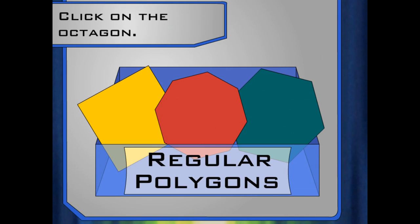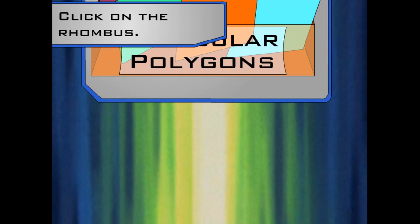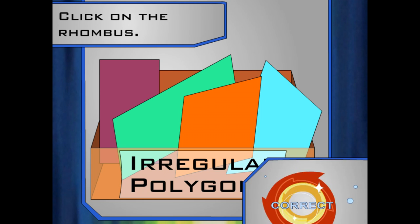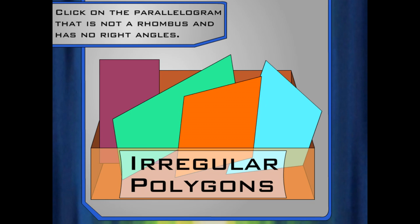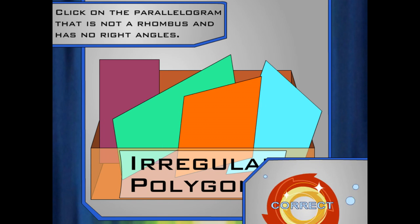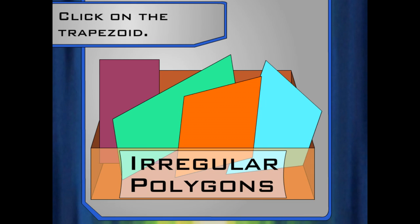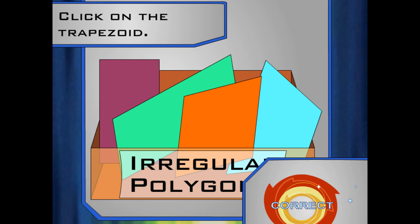Look at the regular polygon box — click on the octagon. Great job! An octagon is an eight-sided regular polygon. Click on the rhombus in the polygon box. That's right! A rhombus is a polygon with four sides of equal length. Click on the parallelogram that has no right angles. Excellent! Any polygon with two pairs of parallel sides is a parallelogram. A parallelogram that has four right angles is called a rectangle. Click on the trapezoid in the irregular polygon box. You've got it! A trapezoid is an irregular polygon with only one pair of parallel sides.